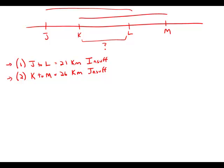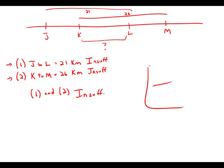Now that both statements have been judged insufficient individually, we consider the combination. We know the distance from J to L is 21, and from K to M is 26. We want their overlap — the distance from K to L — but we don't know how much they're overlapping. They could overlap by just a mile, or by 5, 10, or 20 miles. Even with both statements together, we cannot answer the question. The combined statements are still insufficient, and the answer is E.